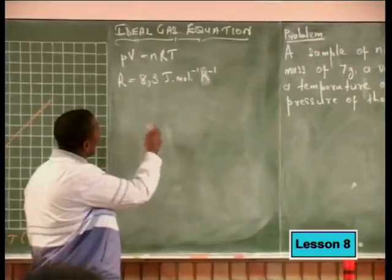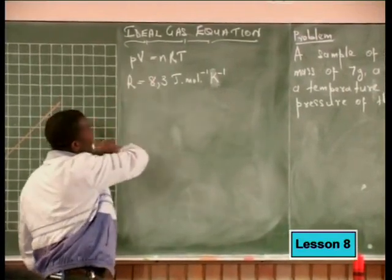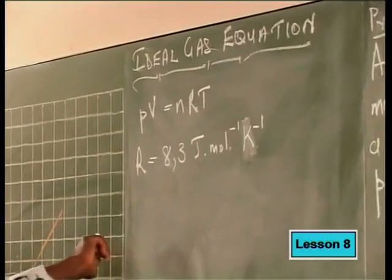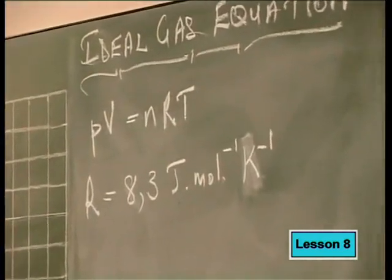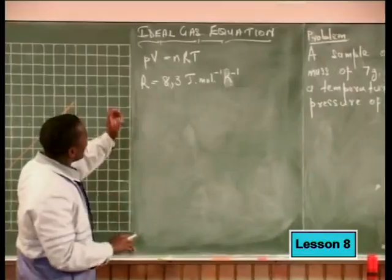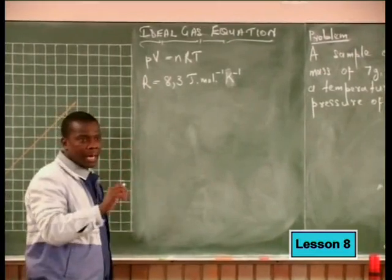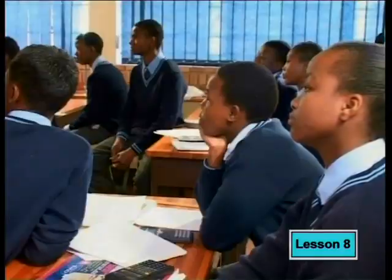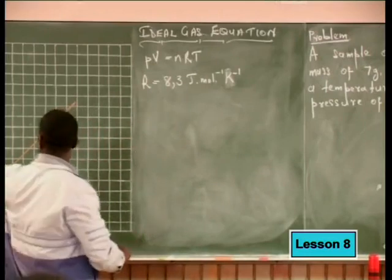When we use the universal gas equation, we need to convert all the values to SI units. The ideal gas equation is: pressure multiplied by volume equals the number of moles multiplied by the universal gas constant multiplied by the temperature in Kelvins. Whenever we use this equation, always stick to SI units — the Système International units — so as to get the unit for the pressure-volume product as Joules.